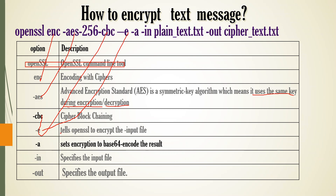It tells the operator to encrypt the input file. Minus e tells openssl to encrypt. Minus a sets the encoding to base64 encoding. The base64 encoding result is in the output.